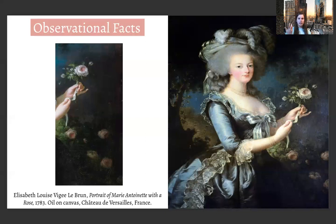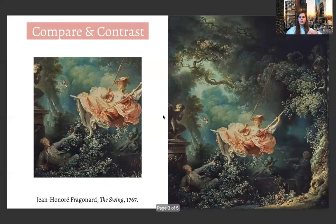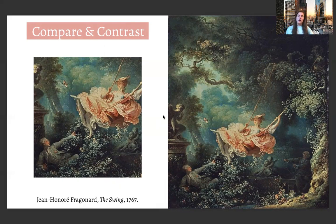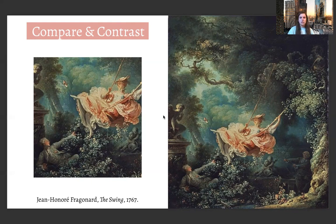The darker tones bring out that brightness a little bit more. For the compare and contrast, I chose an artwork in the same Rococo style as Elizabeth Lebrun's paintings. It's called The Happy Accidents of the Swing — also known as The Swing — painted by Jean-Honoré Fragonard in 1767. Like the Lebrun portrait, it is oil on canvas and has a similar pastel color palette with pinks and a lush blue and green landscape in the background, though this one has a bit more green.